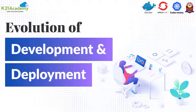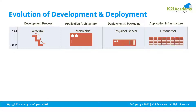If you look at the evolution of development and deployment, in the 80s and 90s the development process used to be the waterfall model, where it took a number of years to create one application. The application architecture used to be monolithic — like big mainframes — and servers were physical servers from IBM. Applications were hosted on data centers.